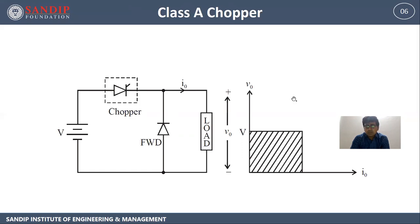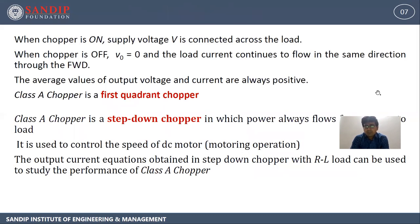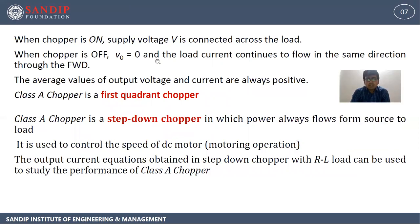So the graph we will get in the first quadrant. When chopper is on, supply voltage is connected across the load. When chopper is off, V0 is equal to zero and the load current continues to flow in the same direction through the freewheeling diode. The average value of output voltage and current are always positive. Class A chopper is a first quadrant, step-down chopper in which power always flows from source to load. It is used to control the speed of DC motor in motoring operation.